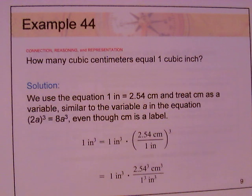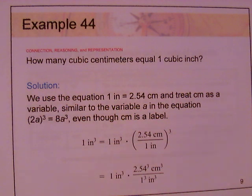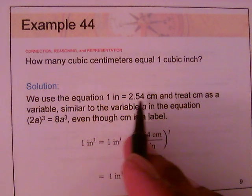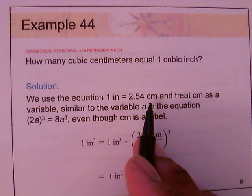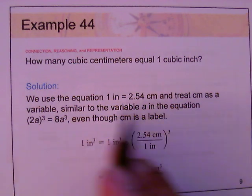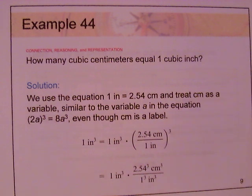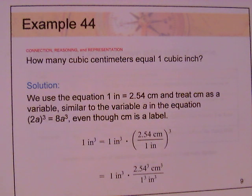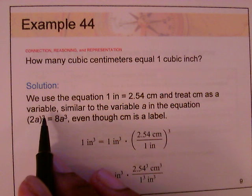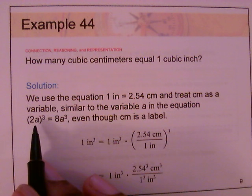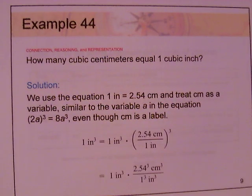Example 44: how many cubic centimeters equal one cubic inch? We use the fact that one inch equals 2.54 centimeters. Treat centimeters as a variable — similar to the equation (2a)³ = 8a³, everything inside the parentheses must be raised to the third power. So 2³ = 8 and the unit label is also cubed.